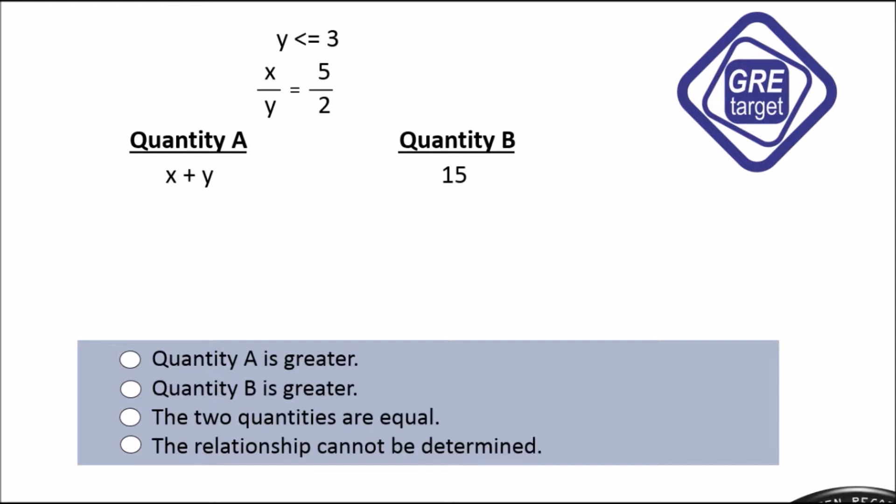Hello friends, welcome to GRE target. Our today's topic is GRE quantity comparison. We have given two equations: y is less than or equal to 3, and the second equation is x divided by y equals 5 divided by 2. Quantity A is x plus y, and quantity B is 15.